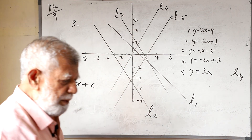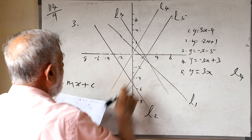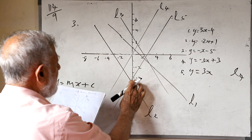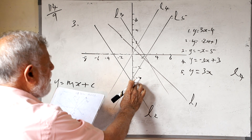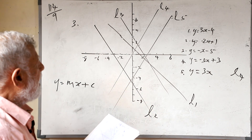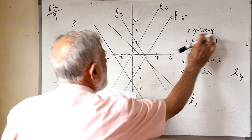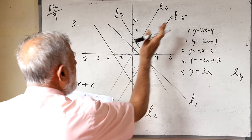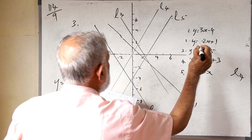Then if you notice L5 — it is going through minus 4, so c = -4. Which equation has c = -4? That is the only equation going through minus 4. And the gradient is positive, so this is equal to L5.